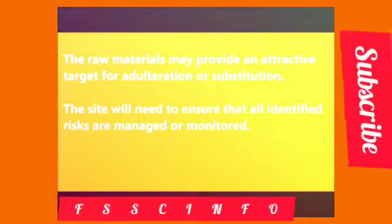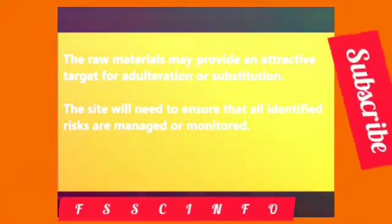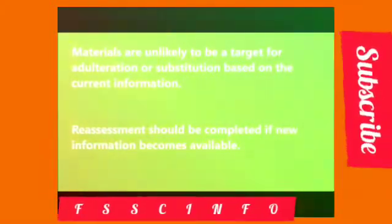Amber color indicates raw materials that may provide an attractive target for adulteration or substitution. The site will need to ensure that all identified risks are managed or monitored. Green color indicates materials unlikely to be a target for adulteration or substitution based on current information. Re-assessment should be completed if new information becomes available.